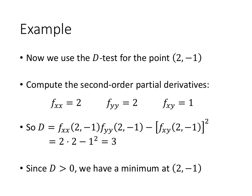Since D is positive, we look back at the different cases of the D-test. D is positive, and since f_xx is also positive, that means we have a minimum at (2, -1).